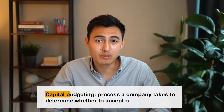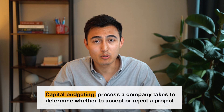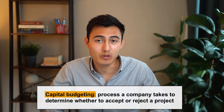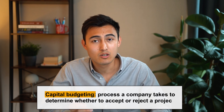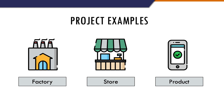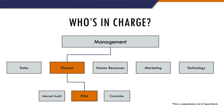What is capital budgeting? In short, it's a process a company takes to determine whether to accept or reject a project. These projects are usually large investments like building out a new factory, opening a store, or creating a new product. Typically, this process is conducted by the financial planning and analysis team within a company. The goal is simply to maximize the profitability of the business and enhance shareholder value.